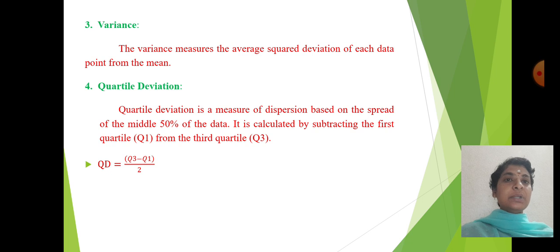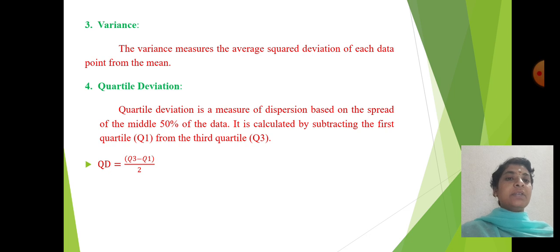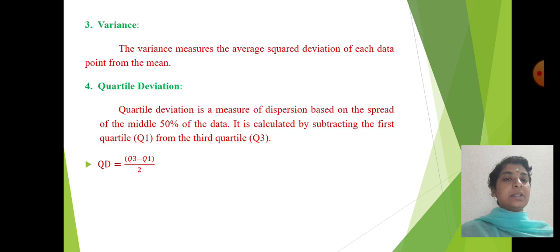The third one is variance. The variance measures the average squared deviation of each data point from the mean. Next one is quartile deviation. Quartile deviation is a measure of dispersion based on the spread of the middle 50 percent of the data. It is calculated by subtracting the first quartile Q1 from the third quartile Q3.